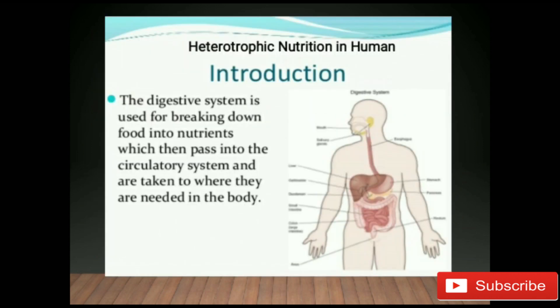Heterotrophic nutrition in humans: human food is of many types because humans are omnivores. The human digestive system is designed for carrying out the digestion of many kinds of food. The digestive system is used for breaking down food into nutrients, which then pass into the circulatory system and are taken to where they are needed in the body.